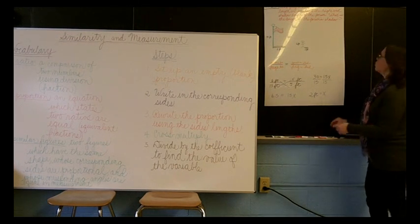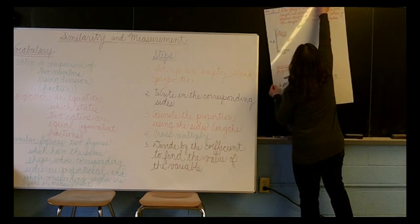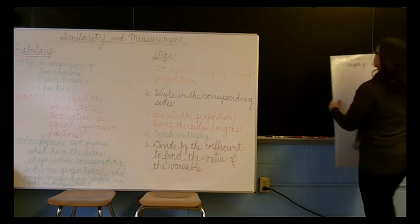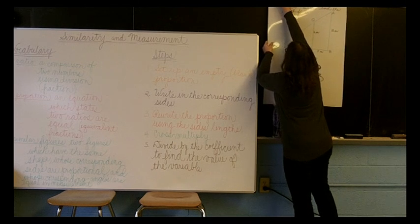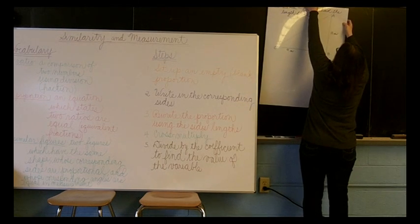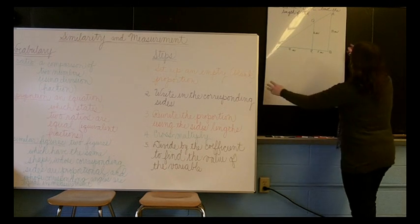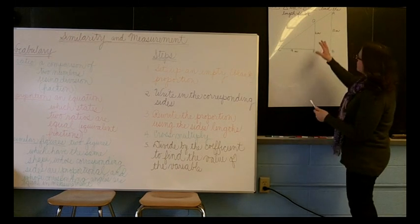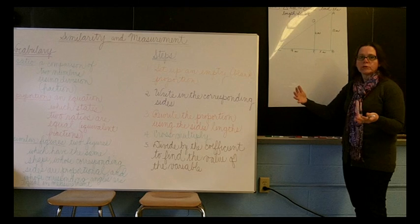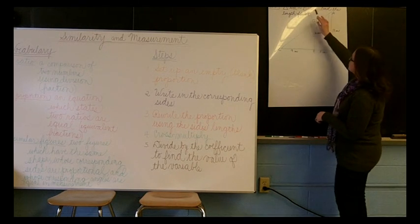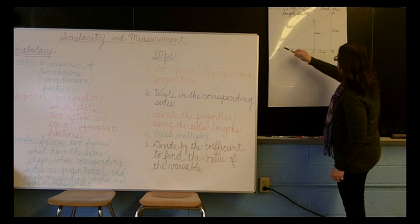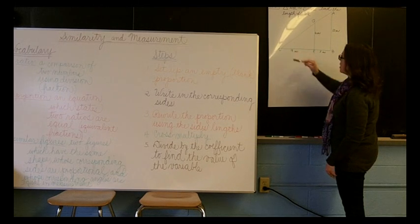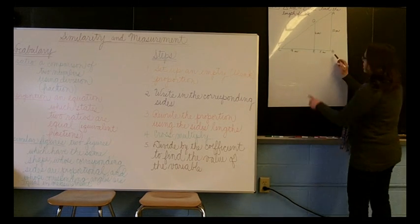Now before we conclude, we will do one more example. And this one is a little different, but it's still the same skill. What we're doing here is we're comparing two triangles. The only difference is one is inside the other. So we are told that triangle ABC is similar to triangle QRC. And what we need to do is find the length of BR.